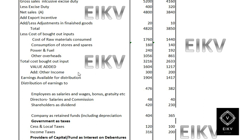We then add other income, which is 300 and 200 for 2018 and 2017, to get the total earnings available for distribution: 1904 and 1470. This amount for each year should match when we total the distribution of earnings, confirming the value added statement is correct.